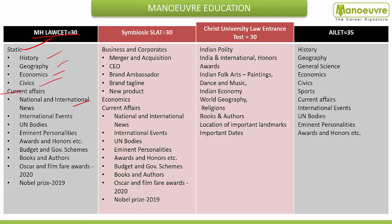In the current affairs part, national and international news, international events, United Nations and UN bodies — you should have complete proper information about them, including the UN Security Council. Important personalities in the news, awards and honours — like Padma Shri award and gallantry awards — all these which are part of current affairs should be updated. Budget and scheme: the government's recent budget announcements and different schemes that have been launched — related information should be with you.